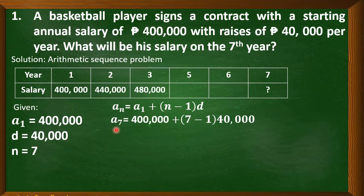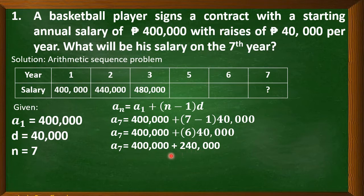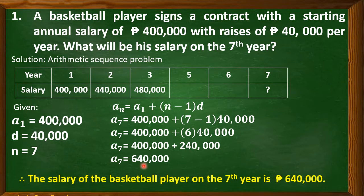Substitute. We are solving for the seventh term. A sub 7 equals 400,000 plus quantity of 7 minus 1 times 40,000. Simplify: 7 minus 1 is 6. So we have 400,000 plus 6 times 40,000, which is 240,000. Now, 400,000 plus 240,000 equals 640,000. Do not forget the unit — the salary of the basketball player on the seventh year is 640,000 pesos.